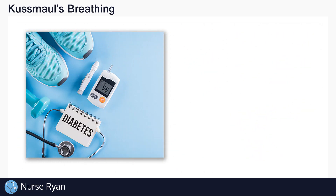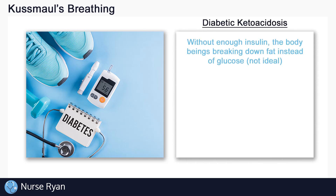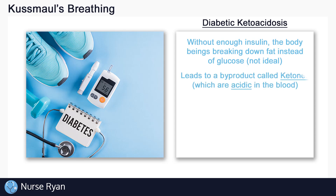Another type of acid buildup that can occur is something called diabetic ketoacidosis. As the name suggests, this is something that occurs in diabetes. Without enough insulin, the body starts to break down fat instead of glucose. This is not ideal, and the breakdown of fat leads to a byproduct called ketones, which end up in the blood.